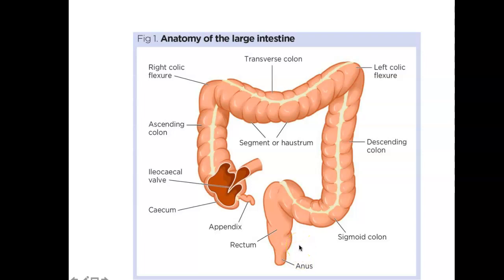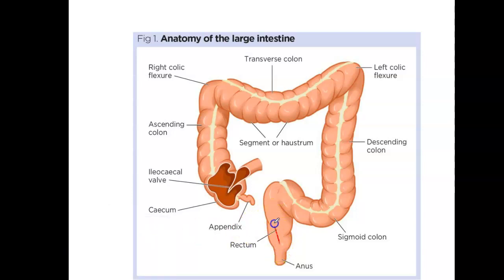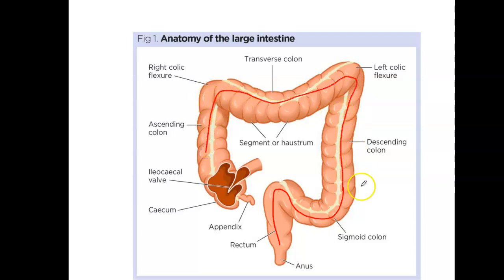You've probably heard of sigmoidoscopies when they're looking for colon cancers. A sigmoidoscopy uses a camera that comes up and just looks at the sigmoid colon region, looking for any kind of growths there, because the majority of colon cancers are occurring in that region. A regular colonoscopy then goes much farther — the camera has to go all the way past those colic flexures, which is pretty amazing.